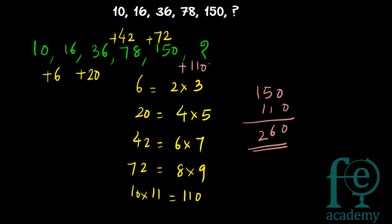So 150 plus 110 gives you 260. The answer is 260. This is a very interesting pattern: find the differences between consecutive terms — you get 6, 20, 42, 72, which is 2×3, 4×5, 6×7, 8×9. The next difference is 10×11 equals 110, so 110 added to 150 gives 260 as the next term.